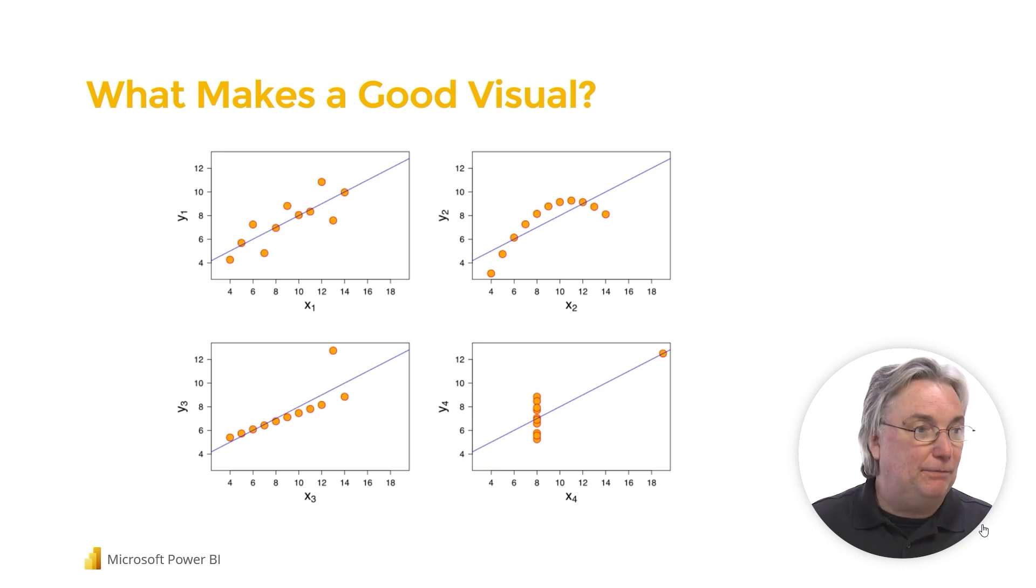And so what he did is he put together four sets of numbers, paired numbers, four completely different sets of numbers. And then he would do descriptive analysis, descriptive statistics right over the top. And they would yield essentially the same results.